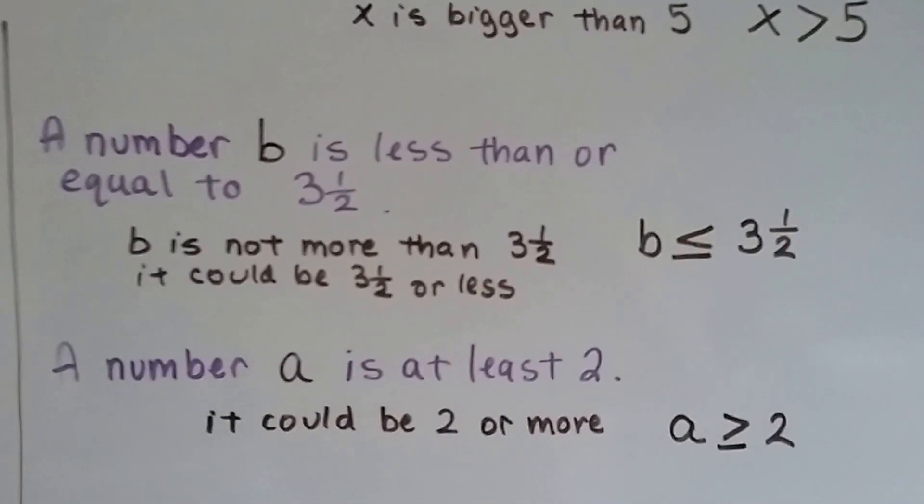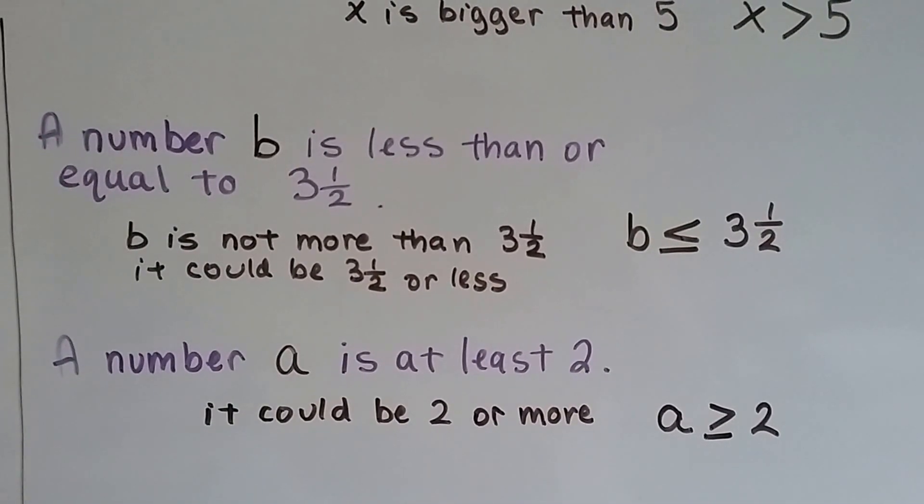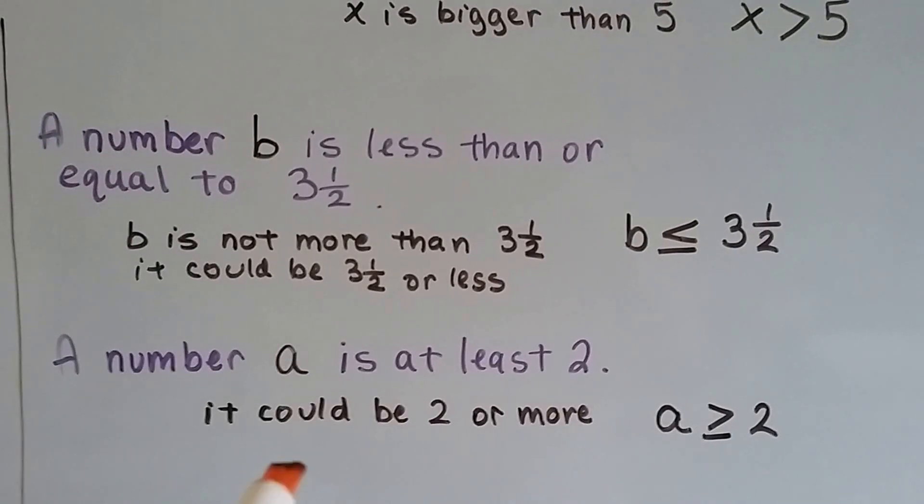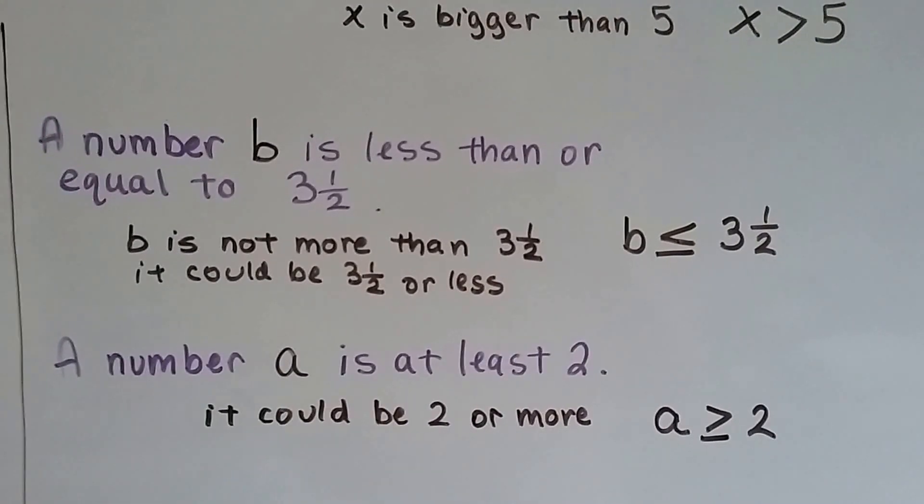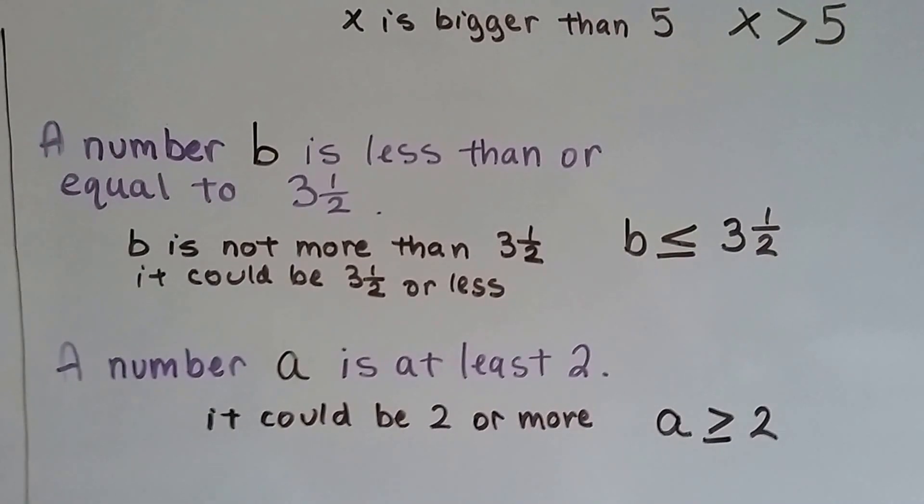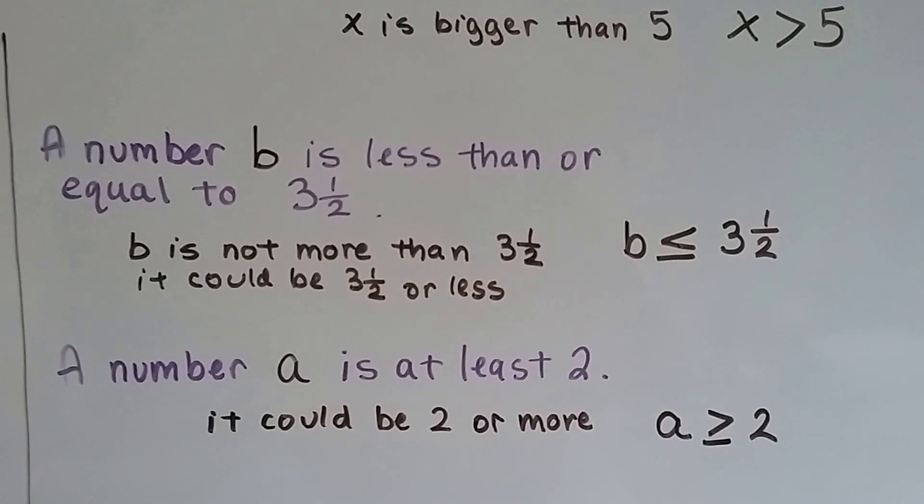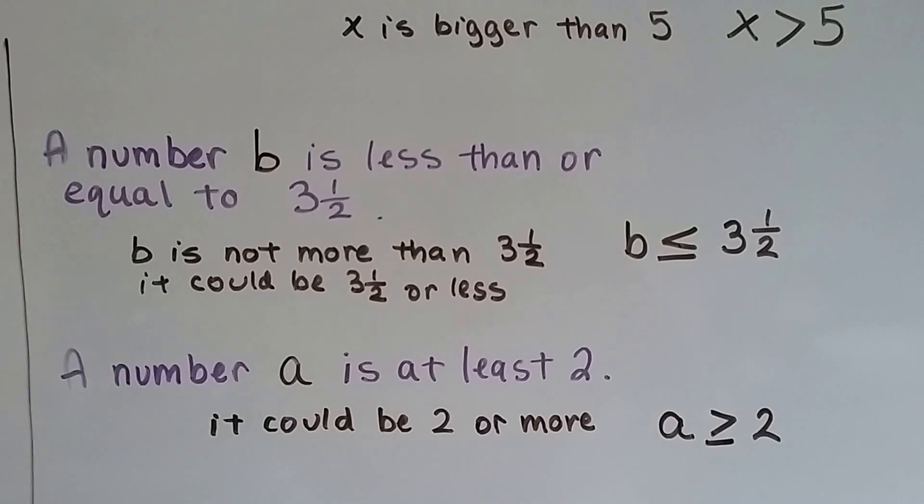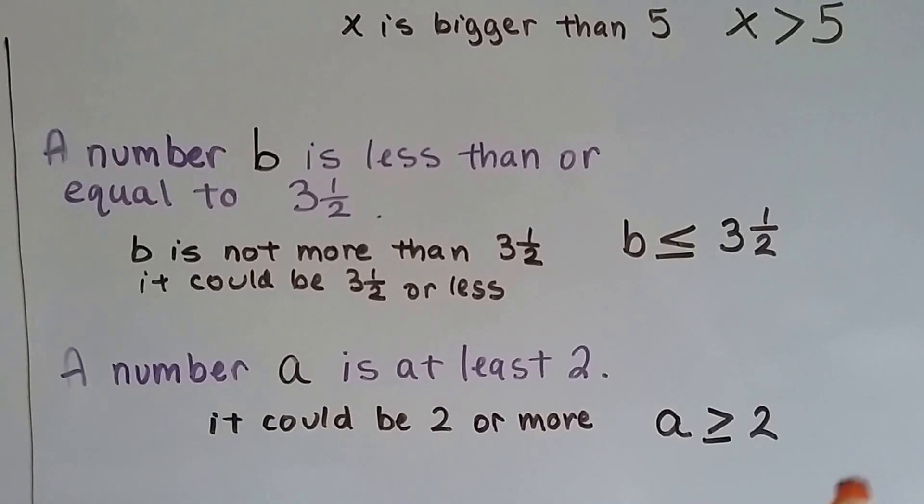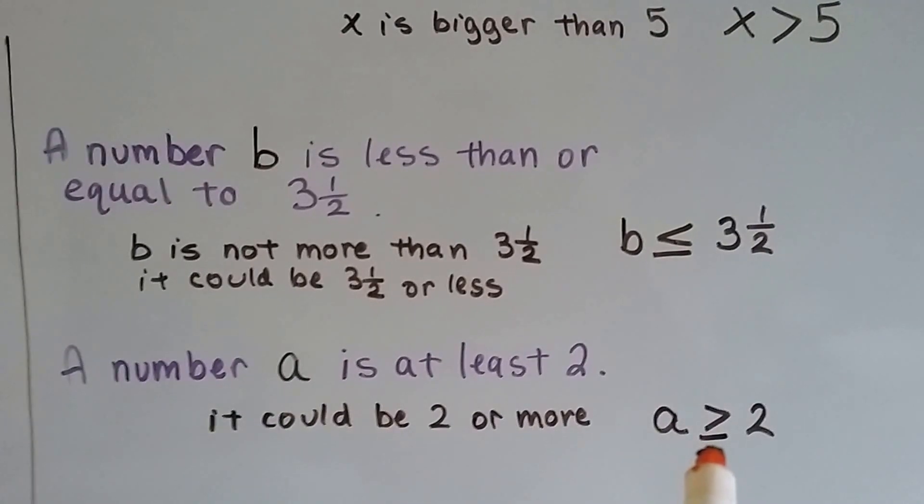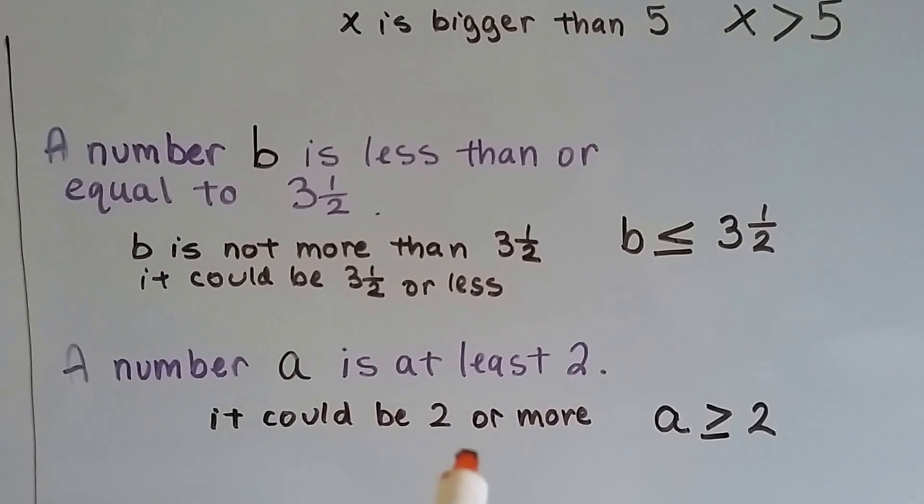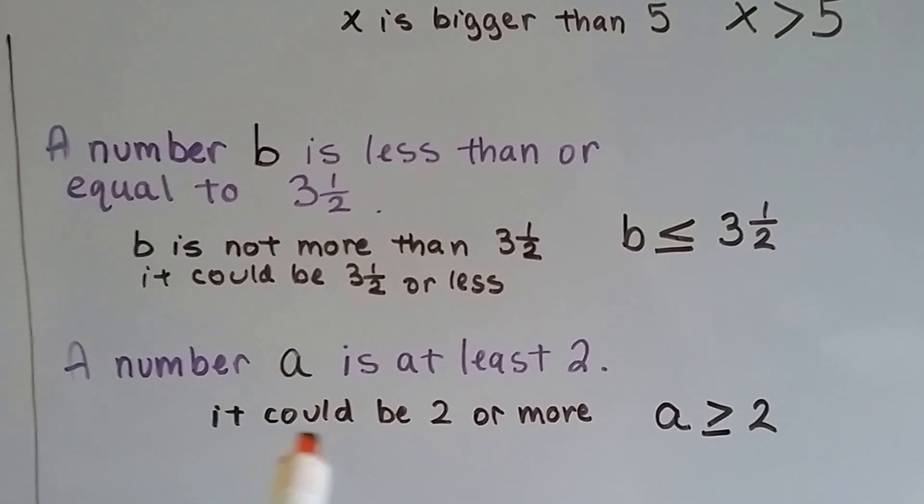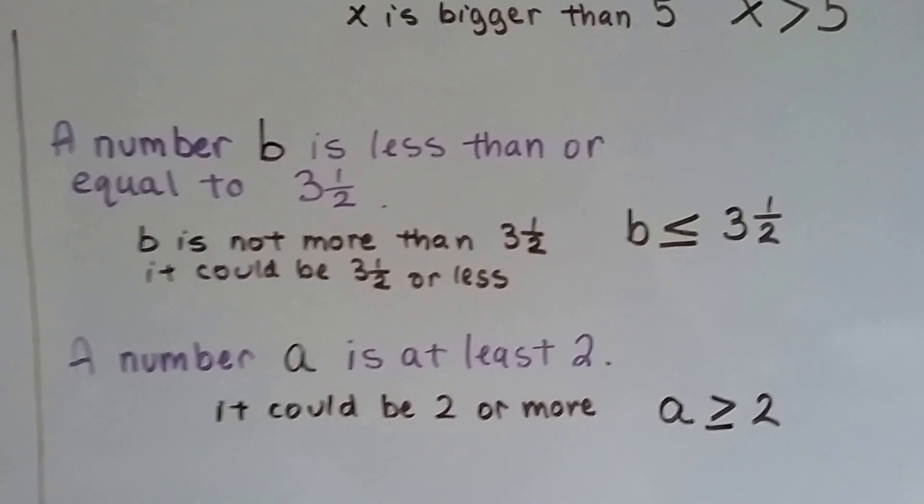How about a number a is at least 2. So, if it's at least 2, it could be 2 or it could be more. It cannot be any smaller than 2. The least it can be is a 2. So, now we can use a greater than or equal to sign because it says it could be 2 or more.